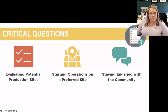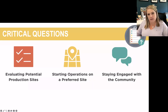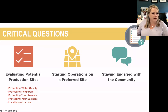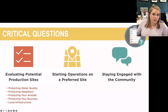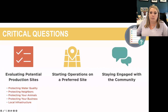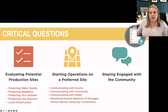The Critical Questions section has three primary subject areas. The first is focused on evaluating potential production sites — things like distance to surface water bodies, impaired water bodies, distance to neighbors, travel patterns to avoid passing neighbors' houses with manure or loaded livestock trailers, how you intend to protect your animals through biosecurity, and local infrastructure considerations such as how you might support maintenance of gravel roads in the area.